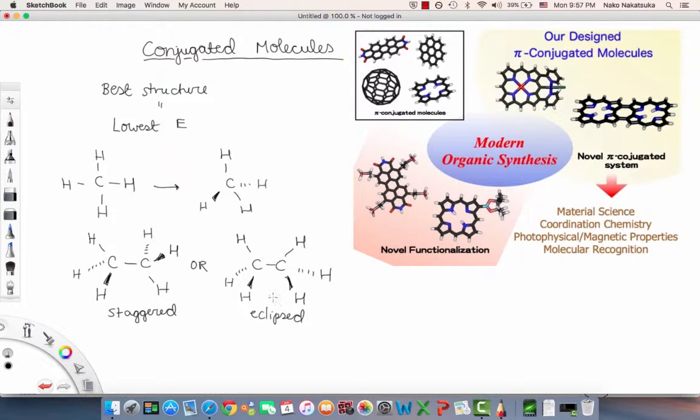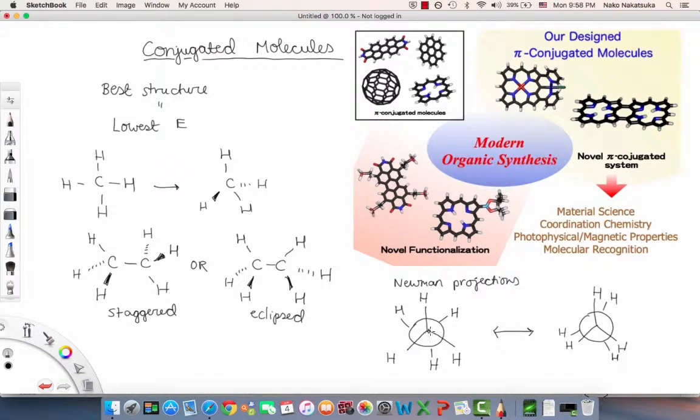And which is the best structure? The one that's staggered. We can also draw these as Newman projections, which I'll show you right here. Remember, staggered configurations are where the hydrogens look like this. These are called Newman projections. On the other hand, if you have an eclipsed configuration, it looks like this. Basically, you're turning around the single bond and you can make it look like a staggered or eclipsed configuration. The staggered one is always lower in energy and thus the better structure.